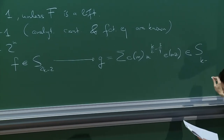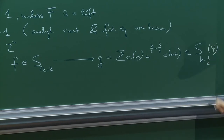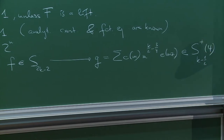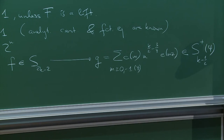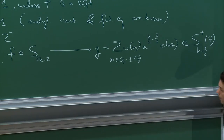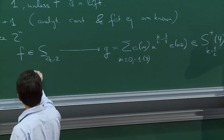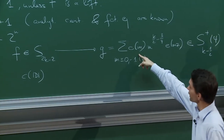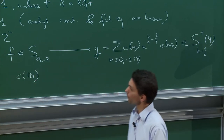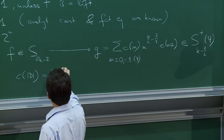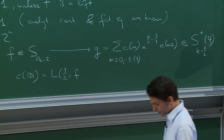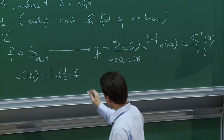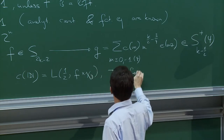This is a half-integral weight form of weight k−1/2 and level 4, in Kohnen's plus space, which means that m is congruent to either 0 or −1 mod 4, so only half of the coefficients occur. Waldspurger's theorem tells us that these coefficients are central twisted L-values of the original function f. With a suitable normalization, the coefficient is L(1/2, f⊗χ_d) for d a fundamental discriminant.